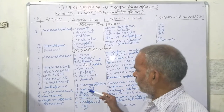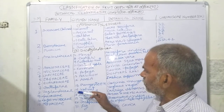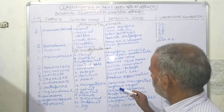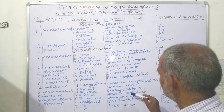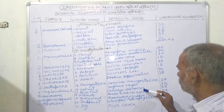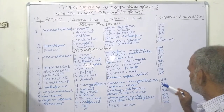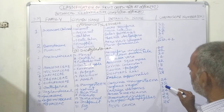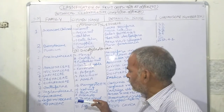Walnut and pecan nut belong to the family Juglandaceae. The botanical name for walnut is Juglans regia and for pecan nut is Carya illinoinensis. The chromosome number for walnut is 32 and for pecan nut is 36.